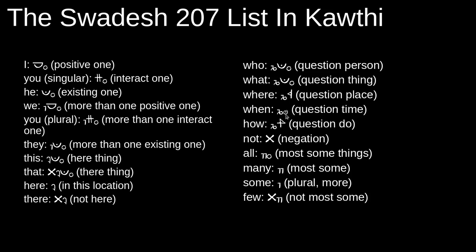'When' is I E, or question time. 'Where' is H, question place. And 'what' is I pay, which means question thing. 'Who' is also I pay, because pay means they — as in a person — or it could be thing, an existing object. So I pay can mean who or what, and you have to interpret that depending on the context.